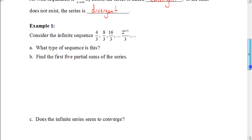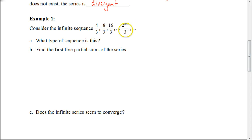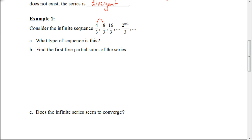Let's look at a particular sequence — copy down these first three terms. The question asks: what type of sequence is this? If it's arithmetic, we'd be adding the same amount each time. Going from four-thirds to eight-thirds, we'd add four-thirds, but four-thirds plus eight-thirds is twelve-thirds, not sixteen-thirds. So this is not arithmetic. If it's geometric, you'd multiply by the same amount each time. Four-thirds times two gives eight-thirds, and eight-thirds times two gives sixteen-thirds. So this is a geometric sequence with constant ratio R = 2.